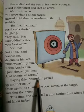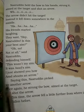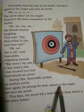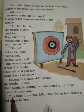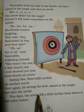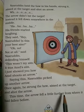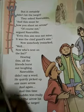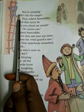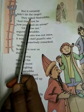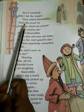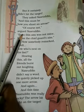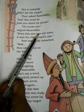Saying this, Nasruddin picked up another arrow. Once again, he strung the bow, aimed at the target and shot the arrow. This time, the arrow fell a little further from where it had fallen before. But it certainly didn't hit the target.